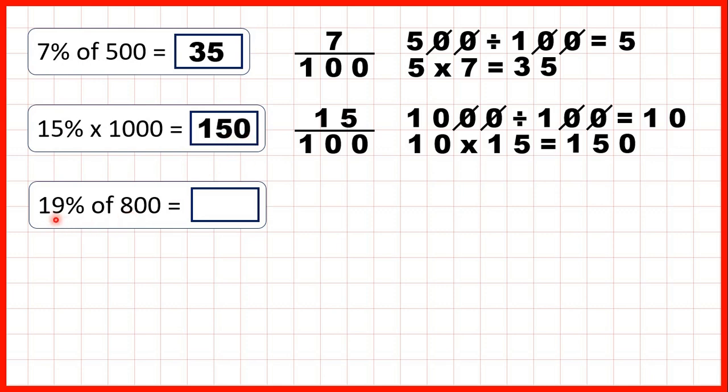Finally we need to find 19% of 800, so 19% is the same as 19 hundredths. So first, we can divide by the denominator, so divide 800 by 100.